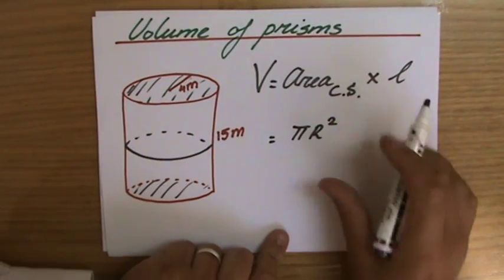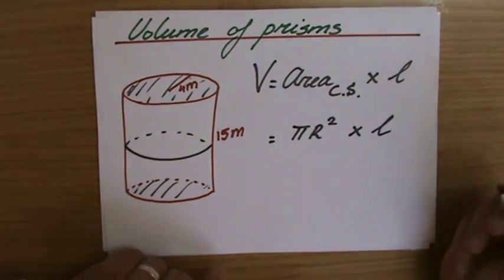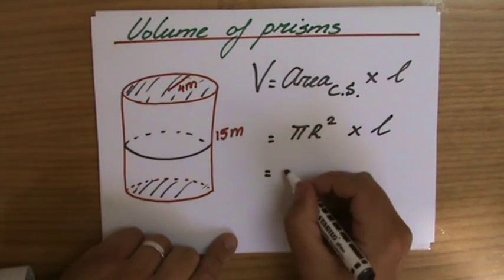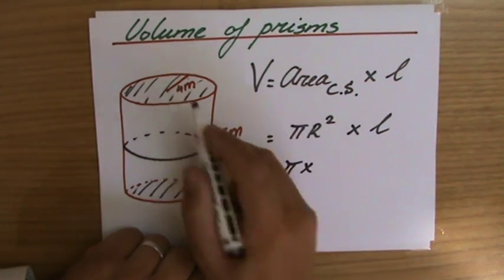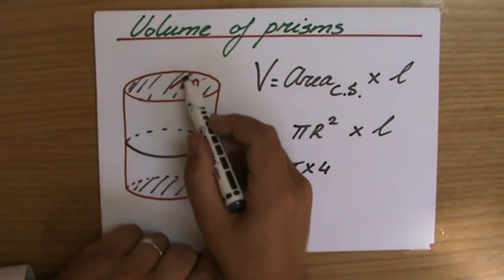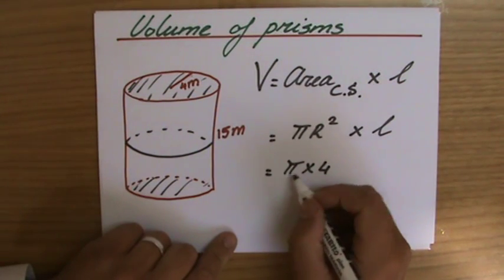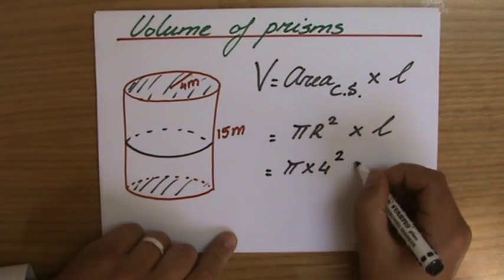So that's the area of the cross-section, and then I multiply by the length to find the volume of my cylinder. Okay, π times the radius squared. The radius is 4 - make sure you know what the radius is. They give you the diameter, you divide it by 2.